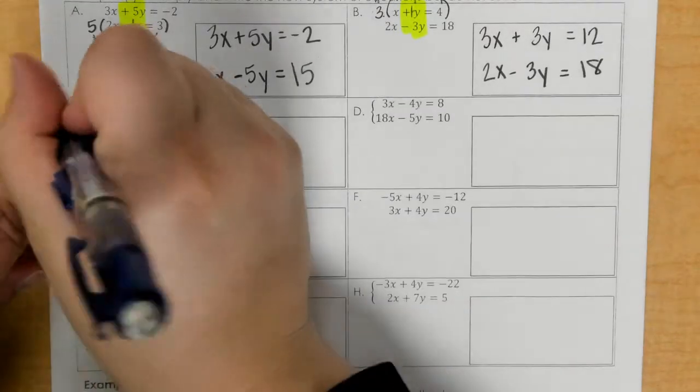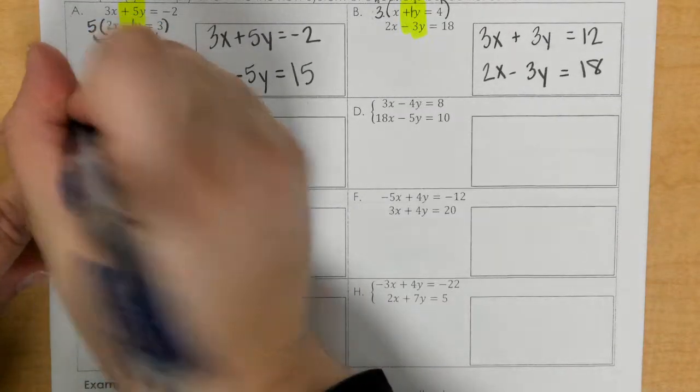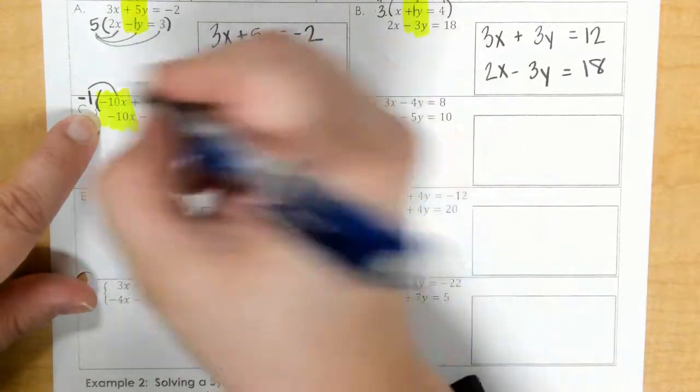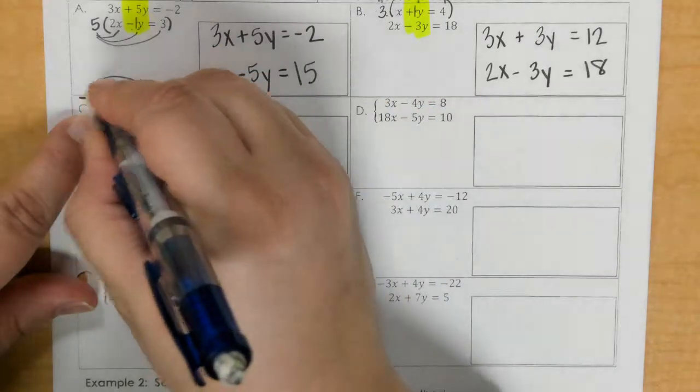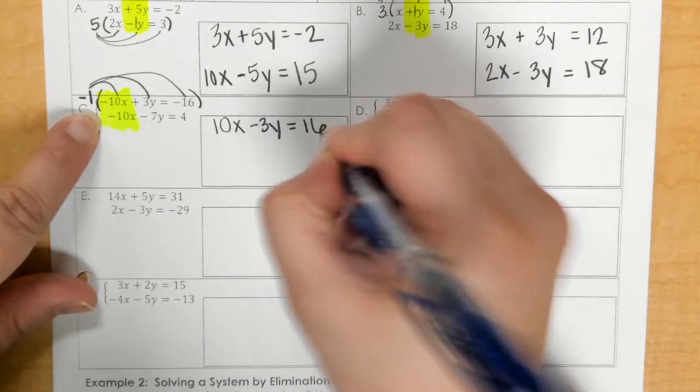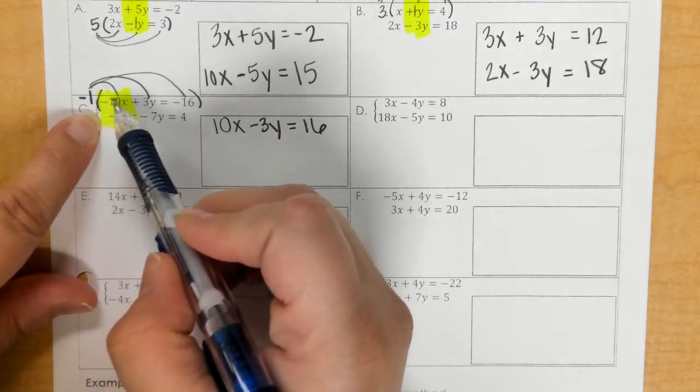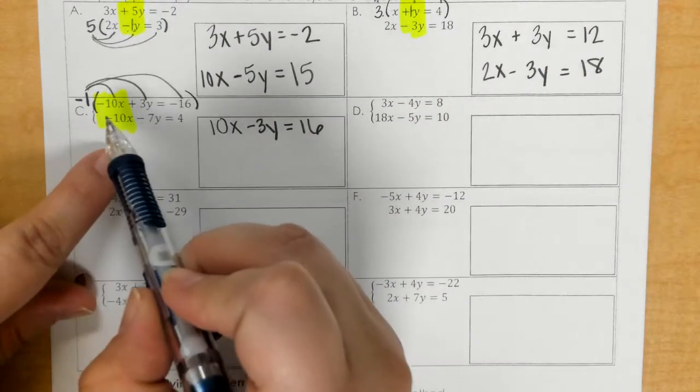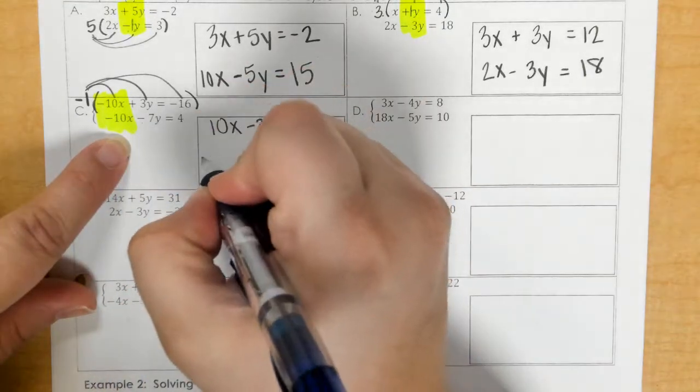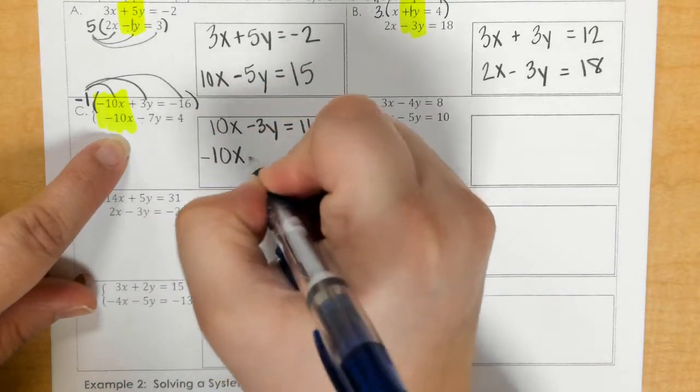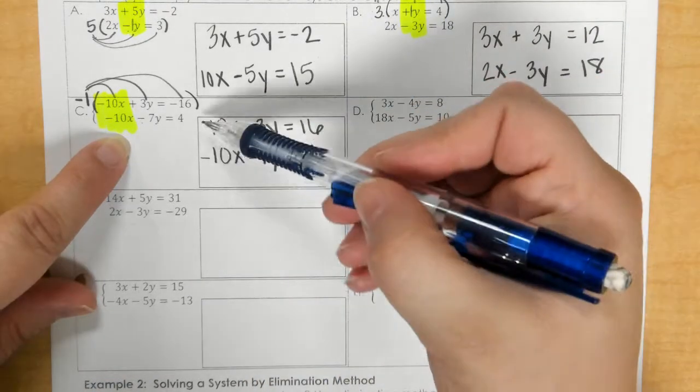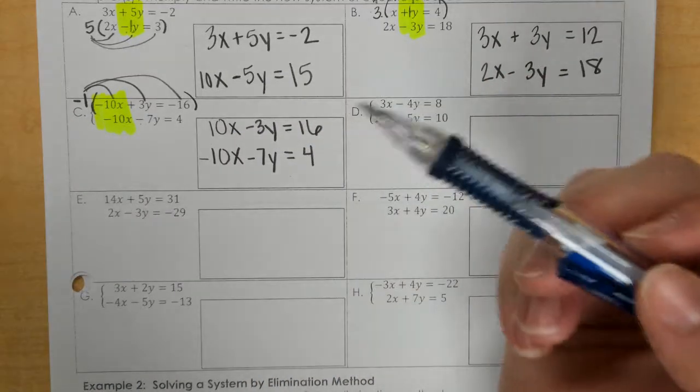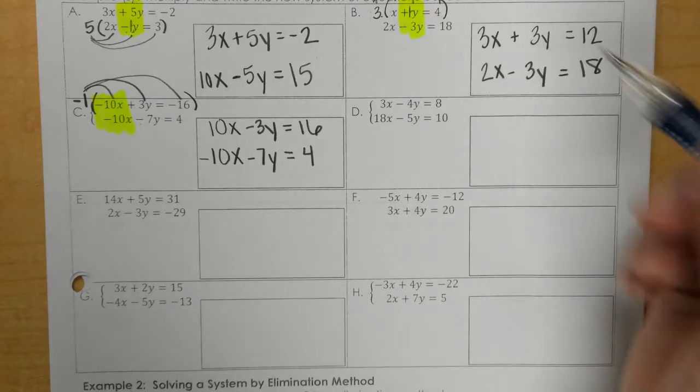And that would be negative 1. So make sure you multiply negative 1 to everything on top. Then on the bottom, we just rewrite it. And you can see that these are opposites that make a 0.